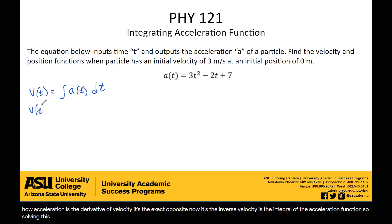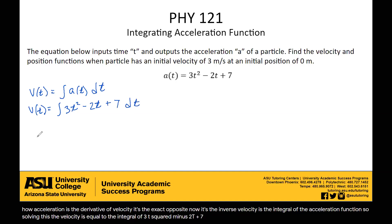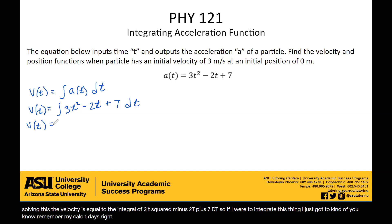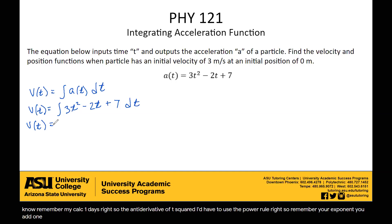So, solving this, the velocity is equal to the integral of 3t squared minus 2t plus 7 dt. If we were to integrate this, I just have to remember the power rule from Calc 1. The antiderivative of t squared: you add 1 to the exponent and divide by that answer. So t squared becomes t cubed over 3 — t cubed.